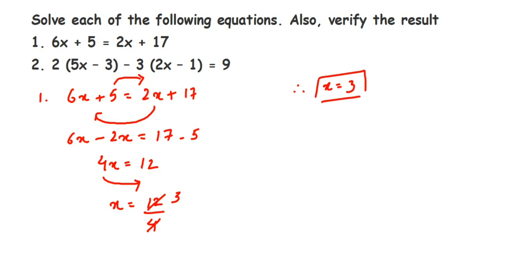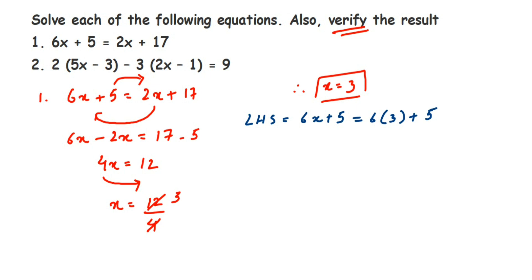Now we have to verify — we check if LHS and RHS are equal. I'm going to substitute x = 3 into LHS first. LHS = 6x + 5. Substituting 3: 6 into 3 plus 5. Six threes are 18, so 18 + 5 = 23.